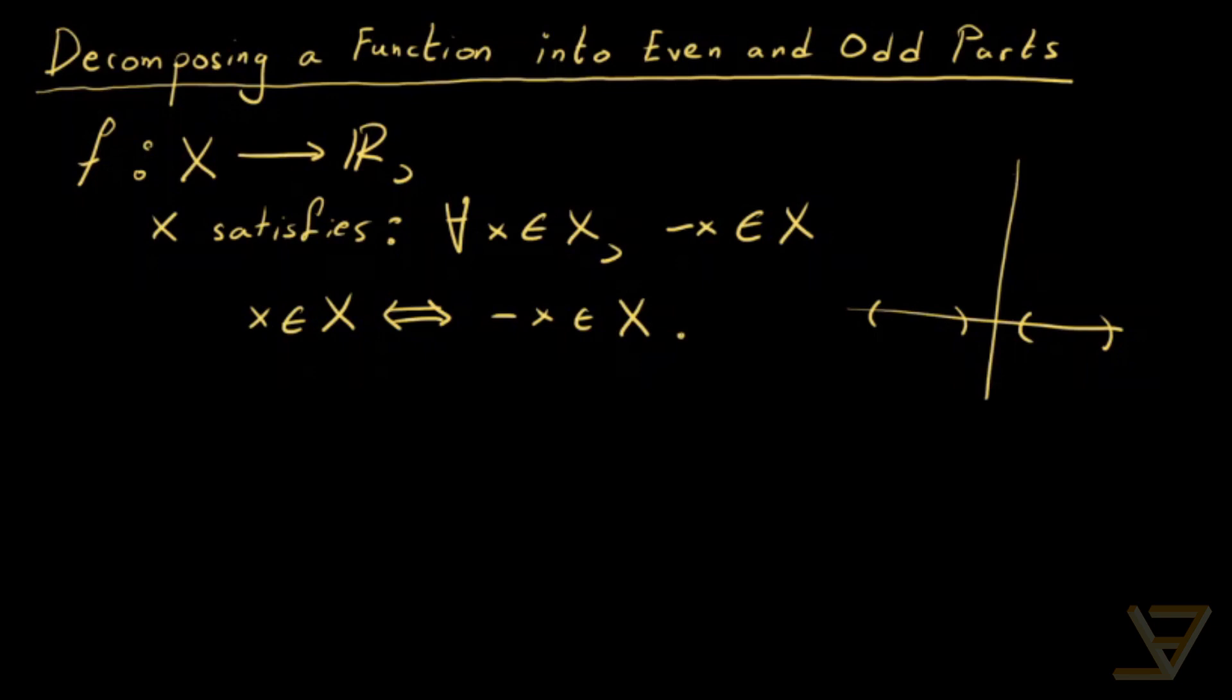Now, what we're going to be proving is that there exists unique functions, an even function and an odd function. We're going to call them f_e and f_o.